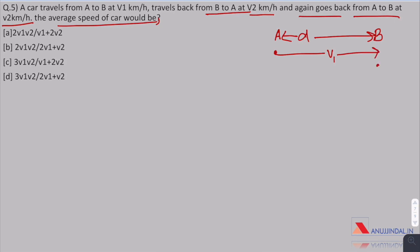Starting from A with V1 speed, a car goes to B. Then from B with V2 speed, it comes back to A and then again from A to B with V2 speed. So the question is asking about the average speed of car.